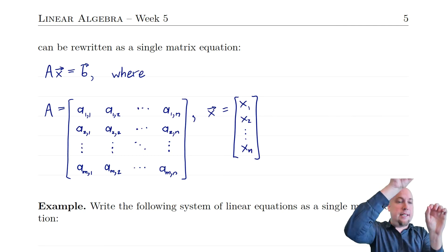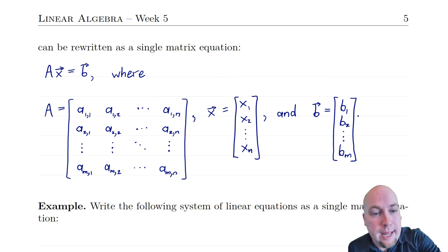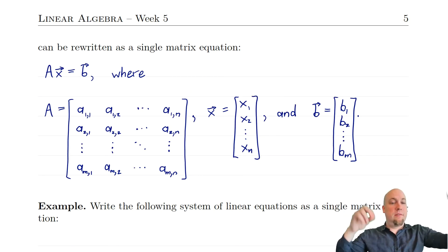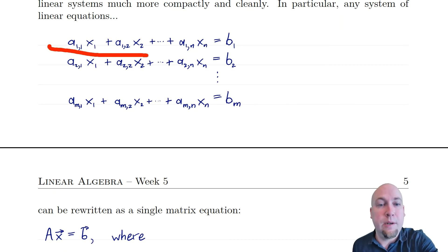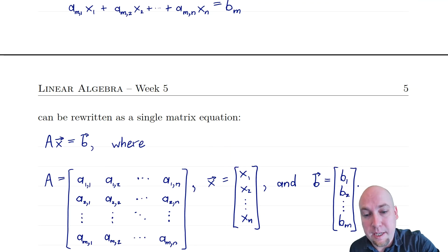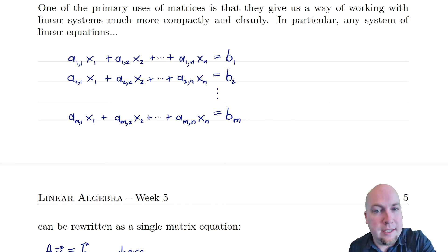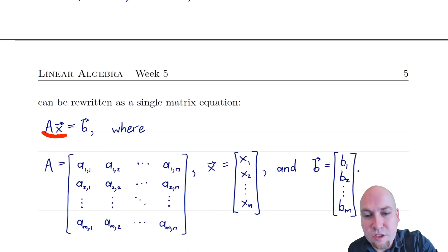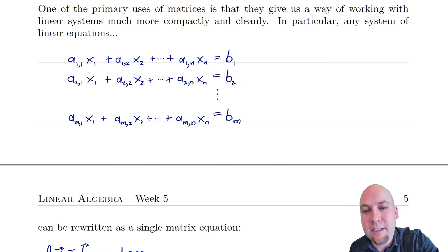Then x is a column vector that just has the variables in it, and b is a column vector that has the right-hand sides — the constants b1 up to bm. If you work out what happens when you do A times x, in the top row of that product you're going to get the dot product of the first row of A with x, which gives exactly a11 times x1 plus a12 times x2 and so on. The top entry on the right is b1. So equality of these two vectors is equivalent to equality of the equations we had, because the equations are basically the entries of those vectors.